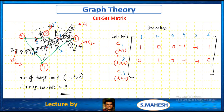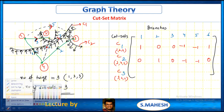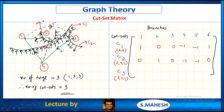C3, cut set 3 covers branches 3, 6, 4. Branch 1, C3 — no connection, 0. Branch 2, C3 — no connection, 0. Branch 3 — same as C3, so 1. Branch 4 — away, minus 1. Branch 5 — no connection, 0. Branch 6 — same direction, 1. This completes the cut set matrix.